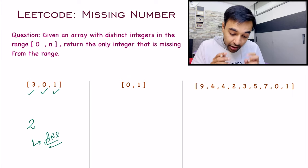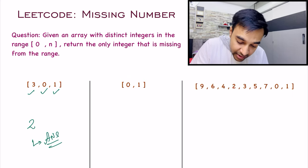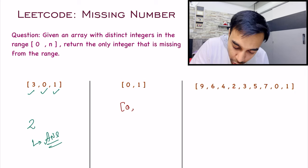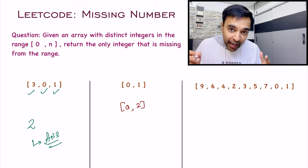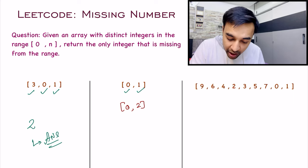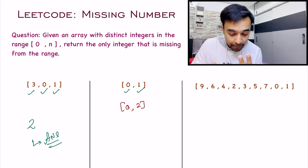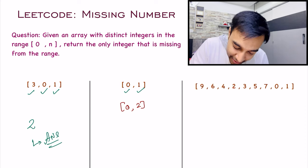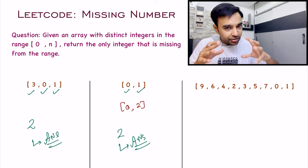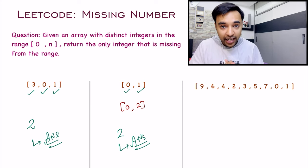Similarly, let us look at our second test case. You can see that this array has two elements, so you're looking at a range of 0 to 2. That means you will look for elements 0, 1, and 2 as well. In our second test case, 2 will be your answer because that completes this entire range.